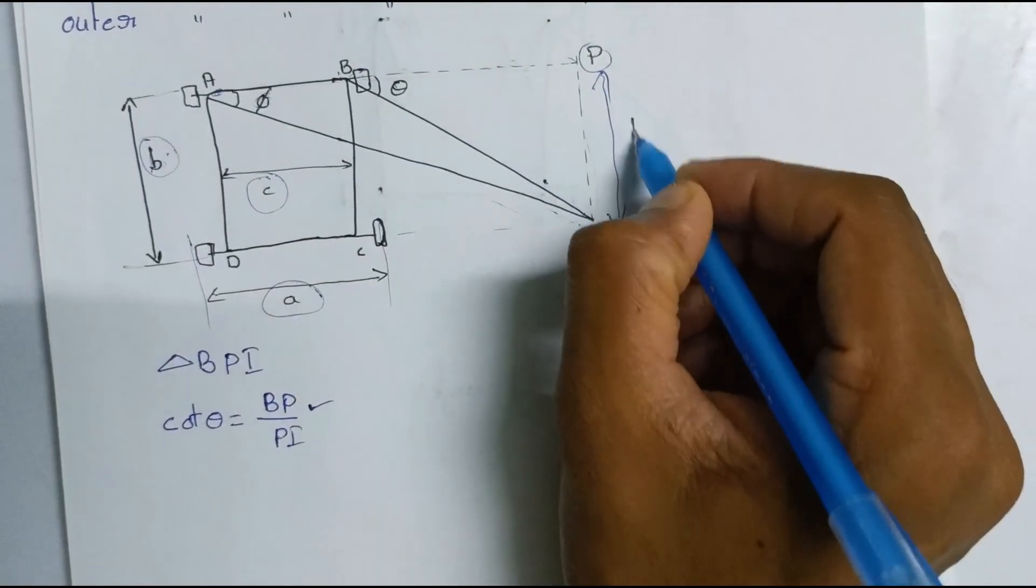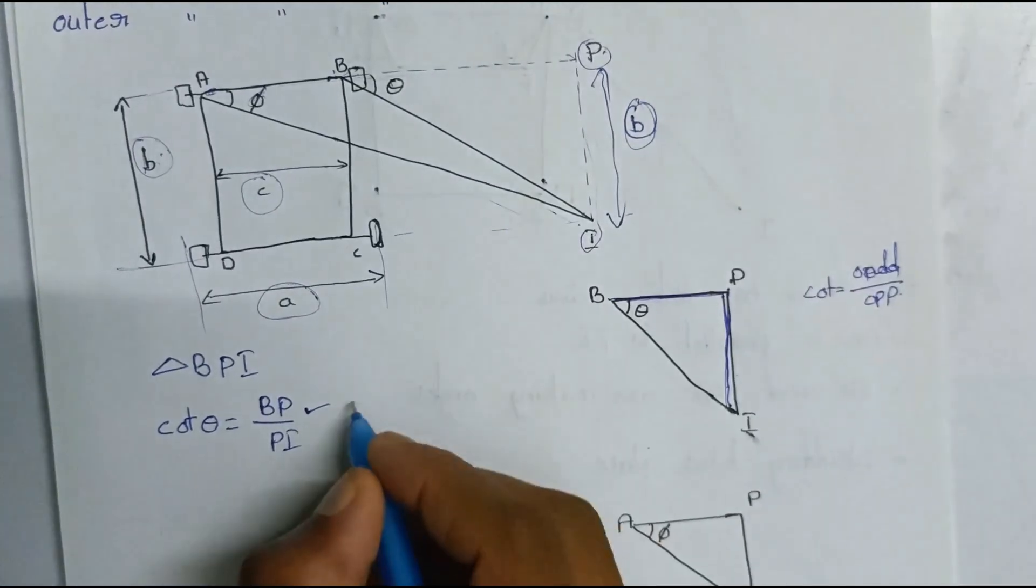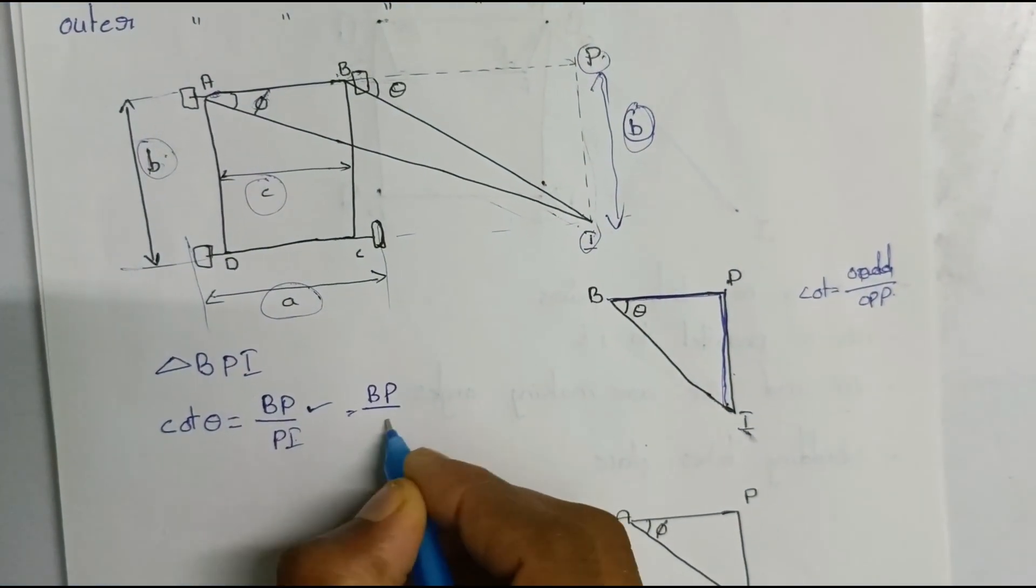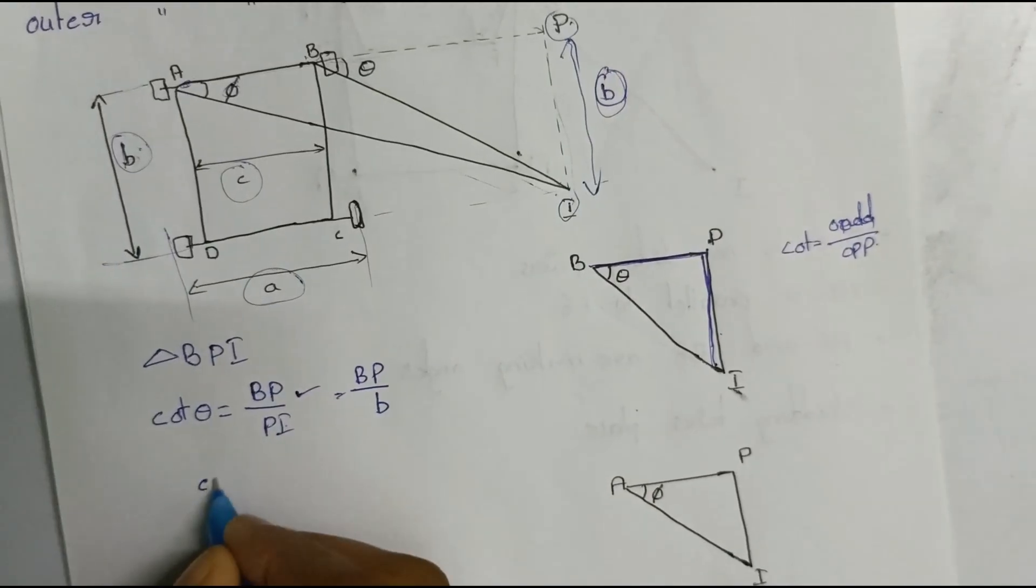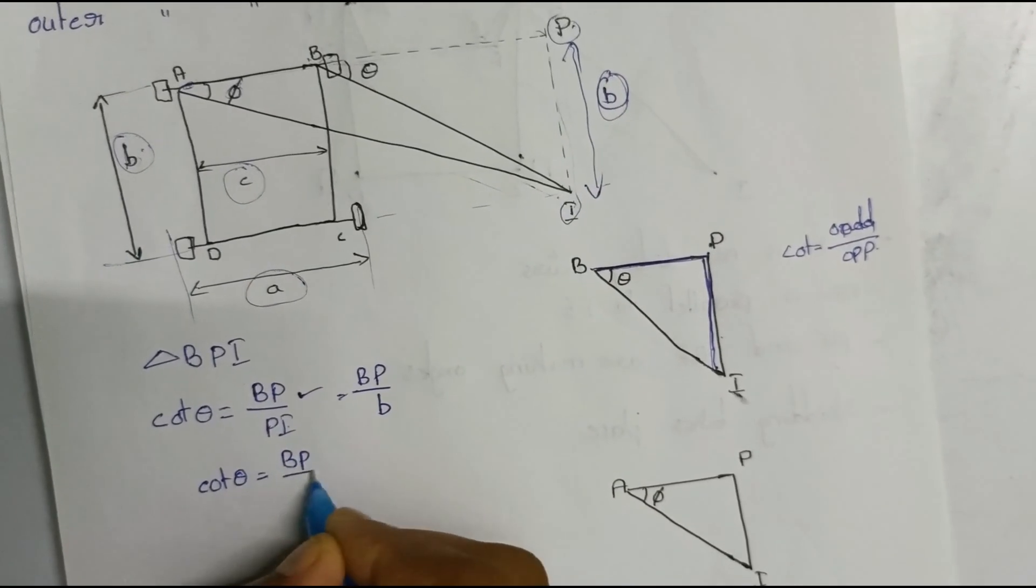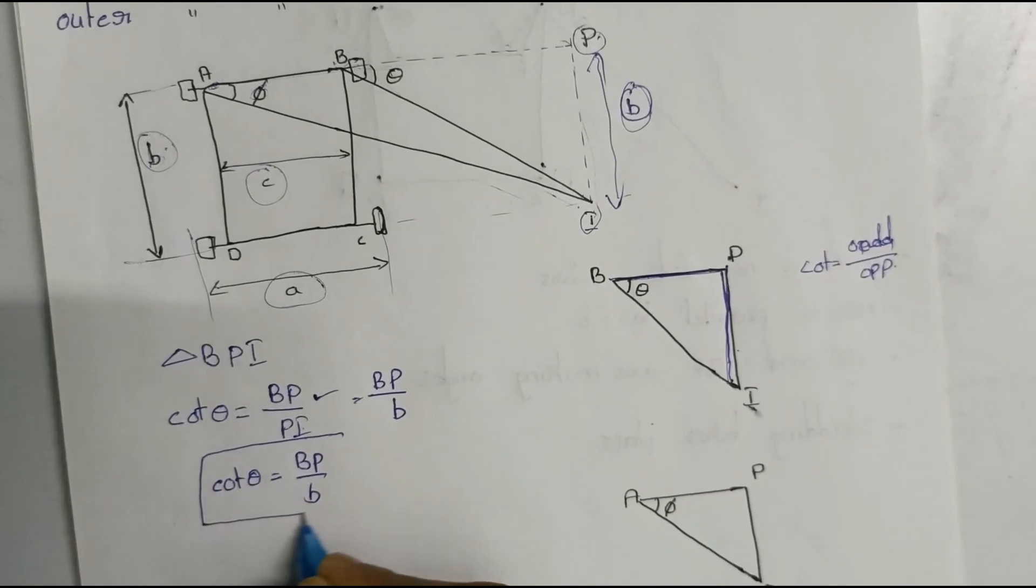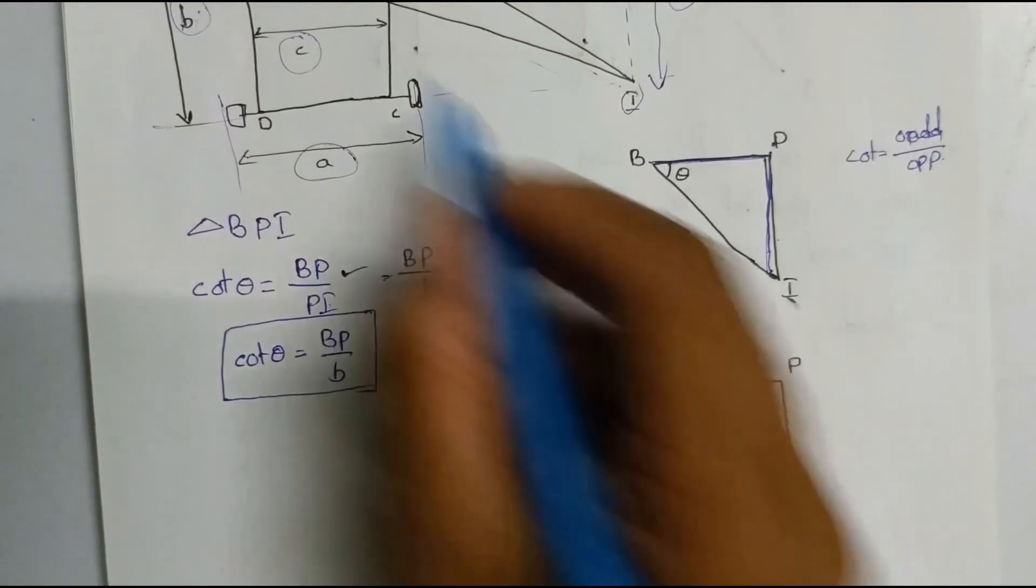Now I will replace the B P by P I. Cot theta is equal to B P by B. Next triangle.